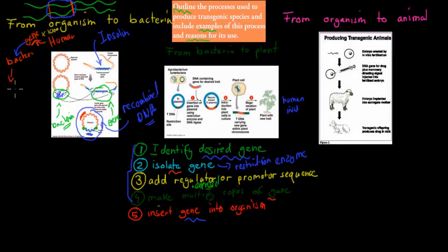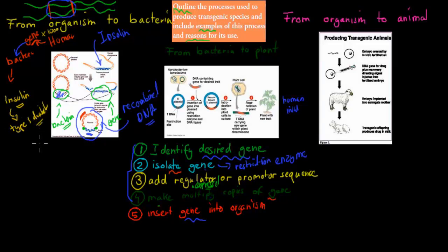Why is that useful? Insulin is really important for people who have type 1 diabetes. People with type 1 diabetes can't make their own insulin because their pancreas cells don't work properly. But if we have bacteria that can make insulin, we can use that insulin — they can then inject it — so we can reduce the cost of making insulin.